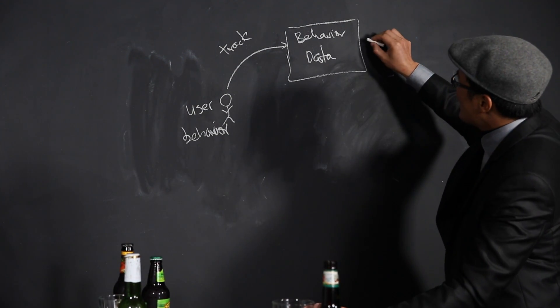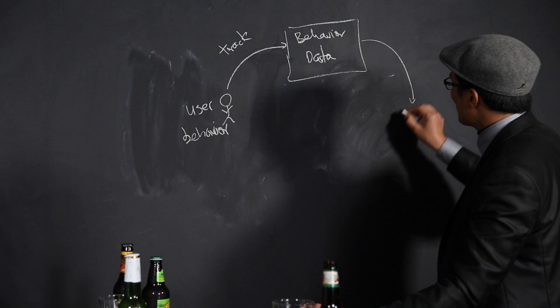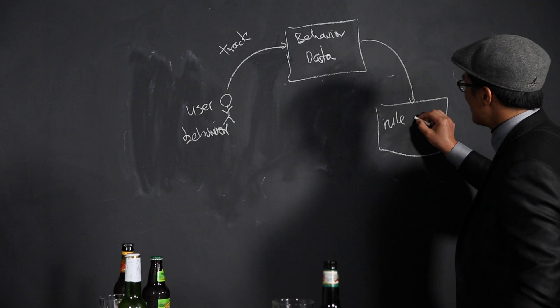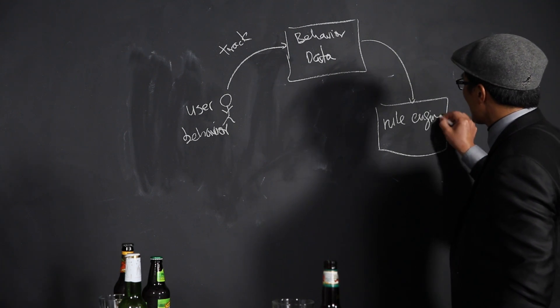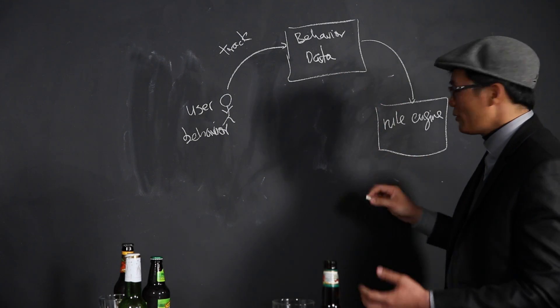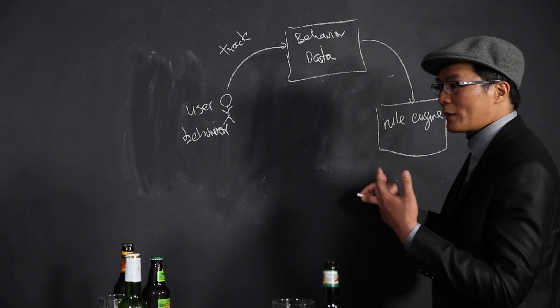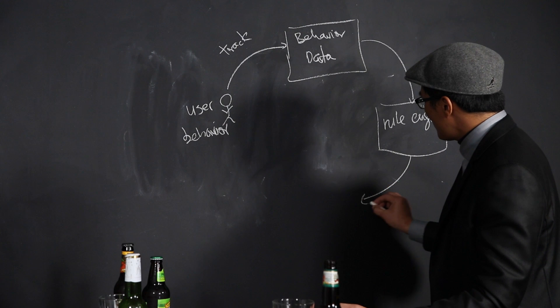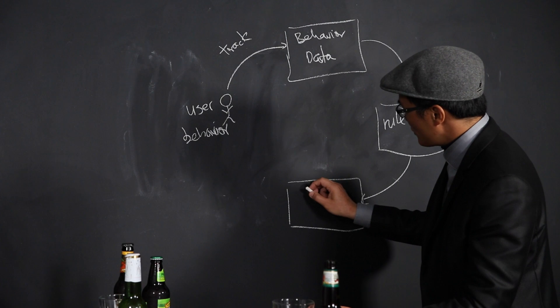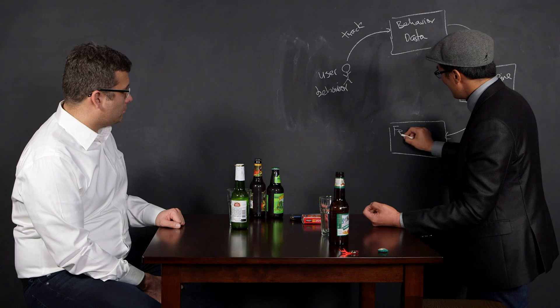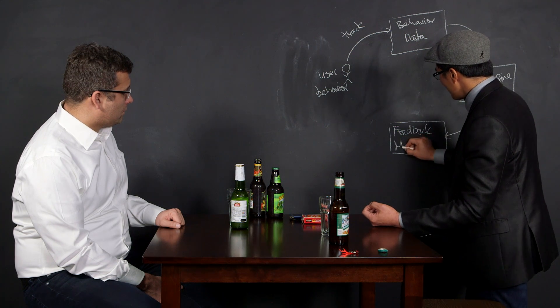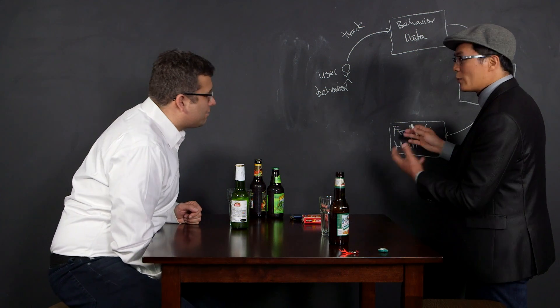And then those behavior data are fed through essentially what I call a rules engine, right? And then the rules engine basically can say, okay, when you exhibit certain behavior, I want to trigger some kind of feedback. So that rules engine triggers some kind of feedback that is delivered by some kind of feedback mechanism. As simple as a badge. Yeah, as simple as a badge.